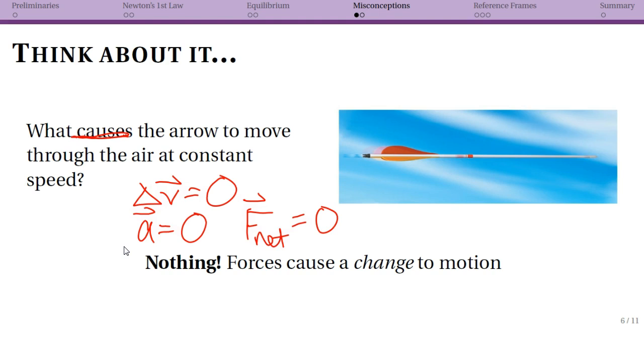Now obviously it has an initial velocity, but we don't actually say that the bow is what's causing it now to do anything. As it's flying through the air at a constant speed, constant velocity, it's just going to do that. A force would cause a change to the motion.